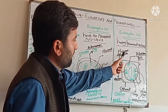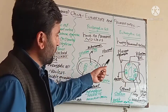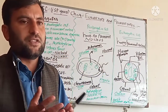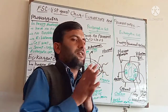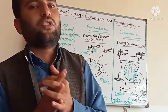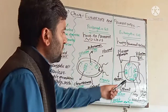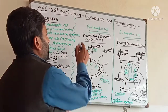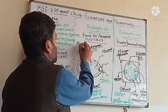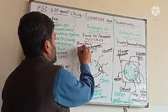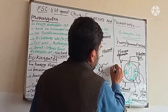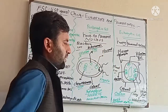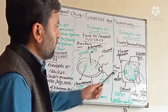This is the Eukaryotic cell if you are looking, and this is the Prokaryotic cell if you are looking. The main topic we have is the difference between Eukaryotes and Prokaryotes of FSC chapter number four. This Prokaryotic cell is essentially a bacterial cell.